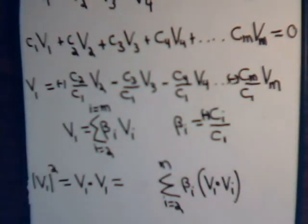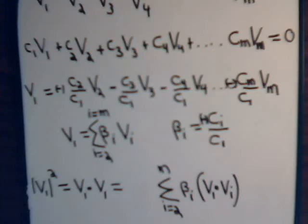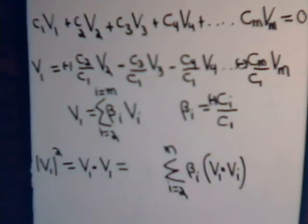But these vectors are mutually orthogonal. So this is always going to be zero. The dot product of v1 with any of these vectors is zero, because they're mutually orthogonal. So that means then that this is zero.